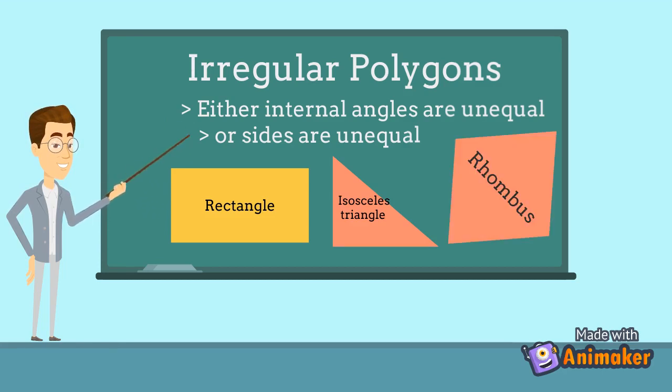Rhombus: in this shape, although all the sides are equal, the interior angles are not equal.